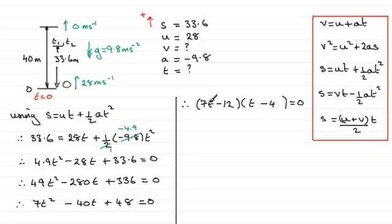Check it out. 7 T squared minus 28 T minus another 12 T is minus 40 T. And then you've got your plus 48 on the end.